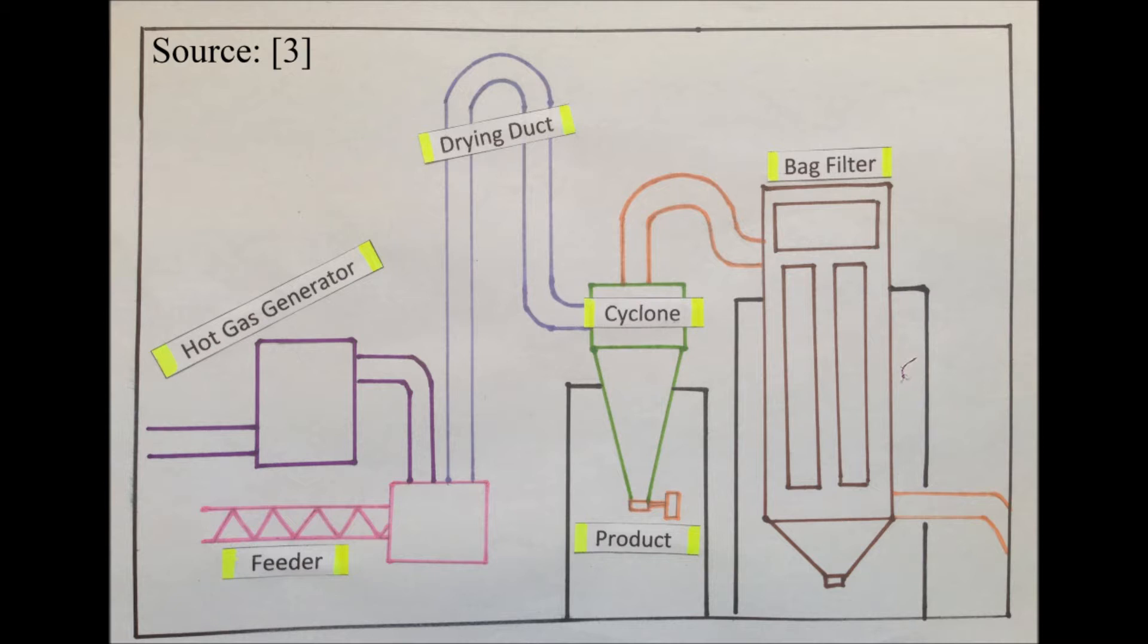The simple flash drying system includes several basic components: the hot gas generator, the wet material feeder, a drying column, the cyclone, and the bag filter.